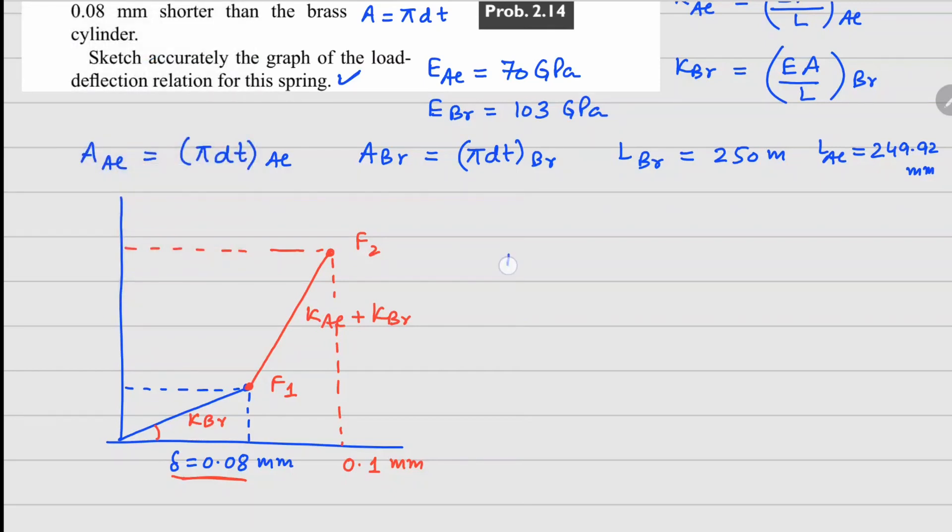So the force value at delta 0.08, your F1 is going to be your K brass times 0.08 mm. And your F2 value here is going to be your K brass times 0.08 mm, this is the force coming from your brass cylinder, and similarly for aluminum.